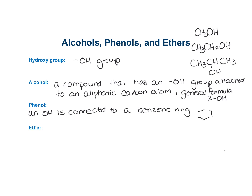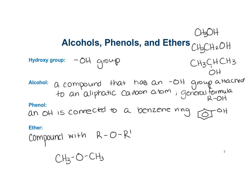Phenols take that structure. An ether is just a compound with a general formula ROR', where R and R' can be the same or they can be different. For example, you can have CH3OCH3 as an ether, or CH3CH2OCH3, where these two are the same - that's called a symmetrical ether - or these two are different, making an asymmetrical ether.